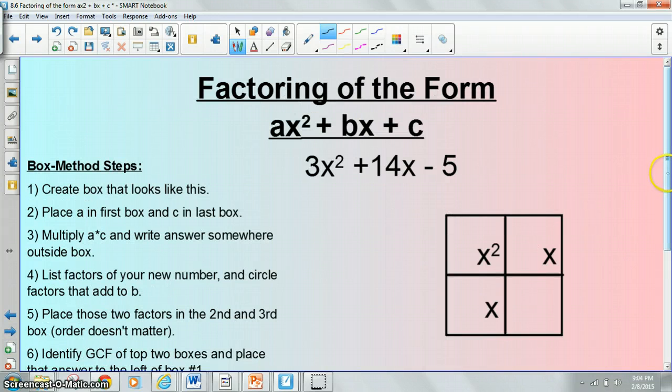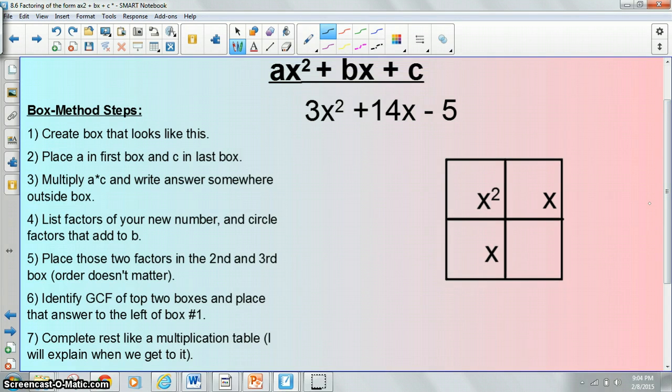Hopefully that made a lot of sense. Go ahead and write this next example down. Create a box that looks like this. Place a in the first box which is 3. Put negative 5 in the last box. Multiply those two things and you get negative 15. Things that could potentially multiply to negative 15: 1 and 15, I know I'm going fast. If I make this video longer than 15 minutes, I get cut off. If you guys need to watch this again, go for it. 1 and 15, 3 and 5. Greatest common factor of the top two boxes is 3x.